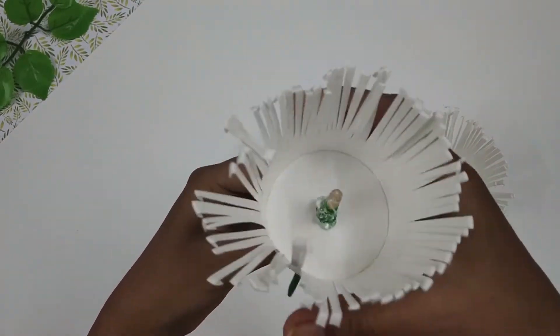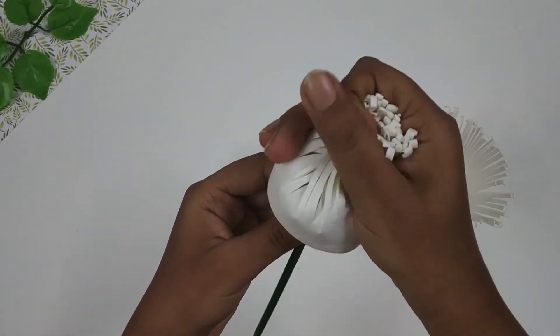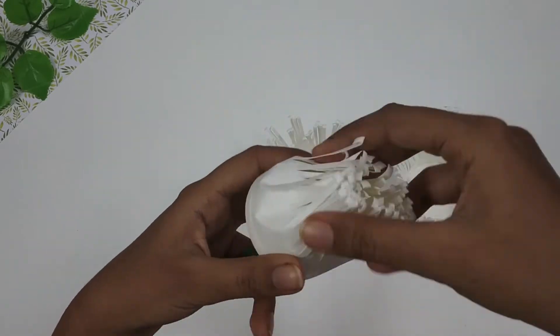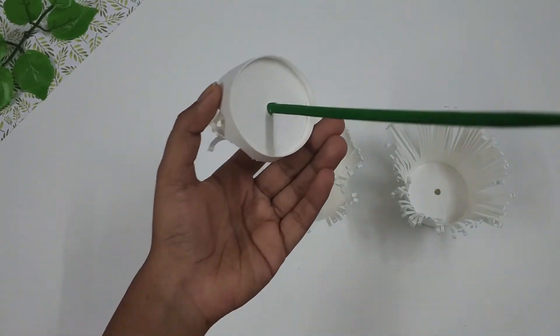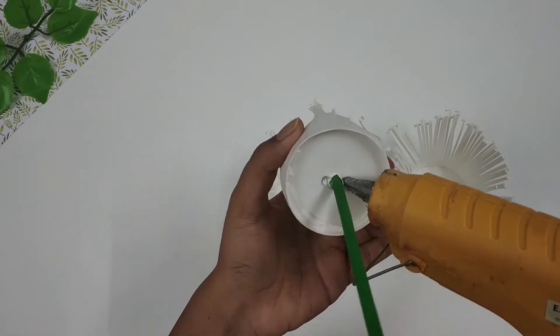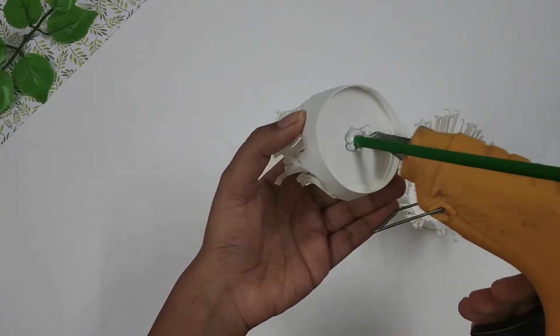Then I'll press the cup inward like this. Now I'll apply some hot glue at the bottom of the stem to further secure it.